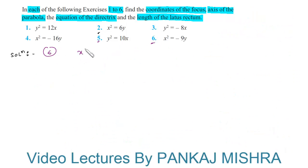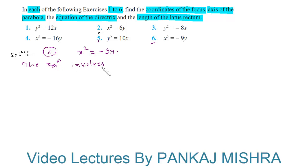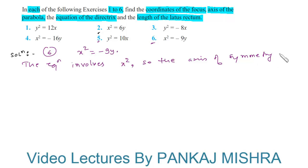In the sixth question, the equation given is x² = −9y. Since the equation involves x², the axis of symmetry is along the y-axis.